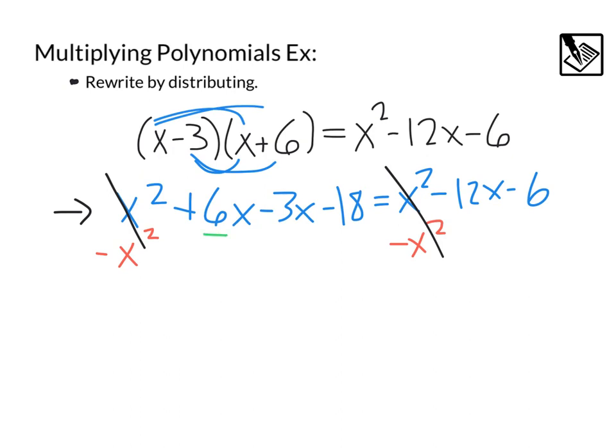From there, we can combine these like terms. We've got 6x minus 3x, which would give us a 3x minus the 18 we have left, equals negative 12x minus 6. And from here, this looks again like a simpler equation we would be able to solve from this point on.